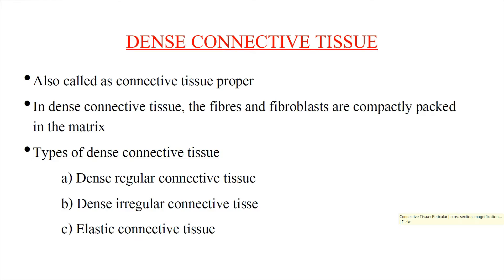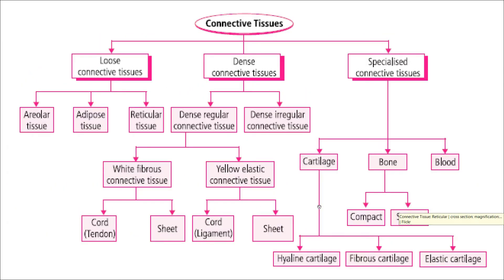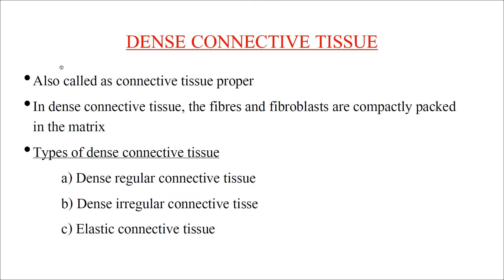Dense connective tissue is classified into dense regular connective tissue and dense irregular connective tissue. Dense regular connective tissue contains white fibrous connective tissue — forming cords called tendons and sheets — and yellow elastic connective tissue forming cords called ligaments. It is also called connective tissue proper, containing fibers, fibroblasts, and matrix that are compactly packed.